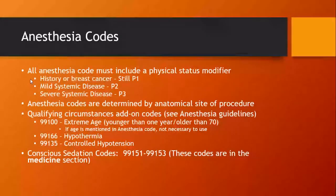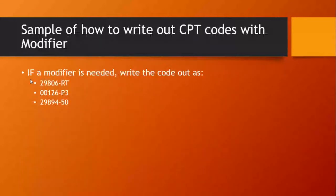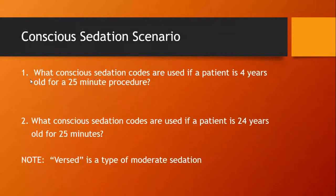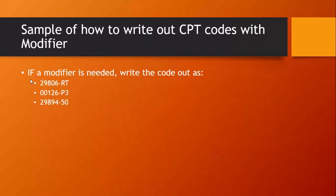Hypothermia and controlled hypotension, or low blood pressure, are codes you're going to see in your exam questions for anesthesia. Then there are conscious sedation codes, which are actually in the medicine section in the back of the book. If a modifier is needed, this is how you write it out — you just put a dash. I don't think we're going to have any directional modifiers; I'll list which modifiers are in this exam in the PowerPoint.